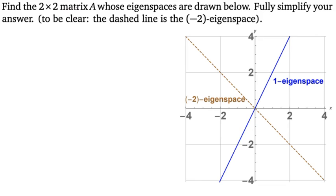Alright, in this problem we want to find a 2×2 matrix A whose eigenspaces are given to us. So normally we do the reverse. Normally we're given the 2×2 matrix A and then told to find what are the eigenspaces and then maybe sketch them or maybe just find a basis for the eigenspaces. But in this problem, we're doing the opposite.